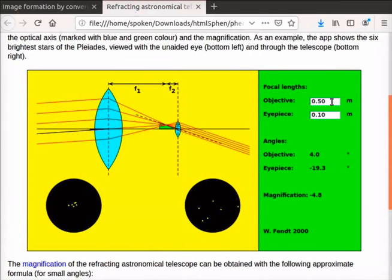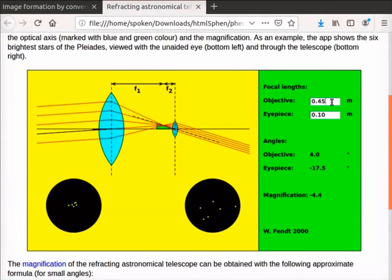Change the focal length of objective to 0.45 m and eyepiece to 0.1 m. Observe that app has calculated the value for magnification. Notice the changes in the black circle. If we increase the focal length of the objective, image will be more magnified.